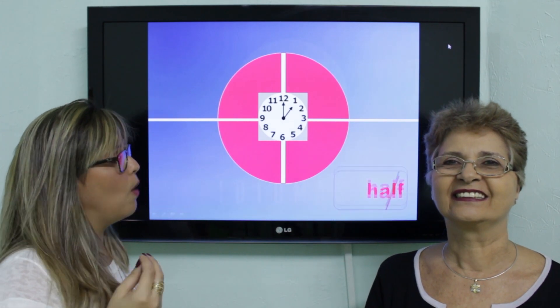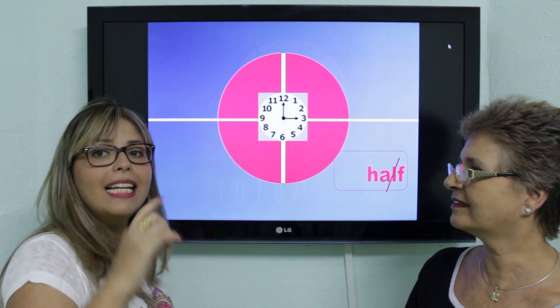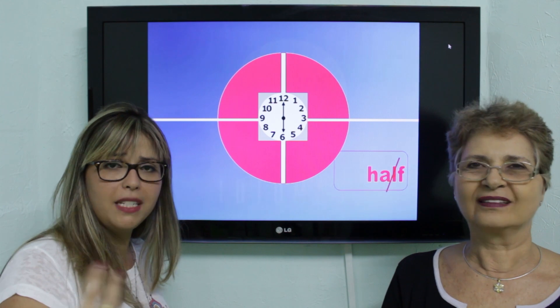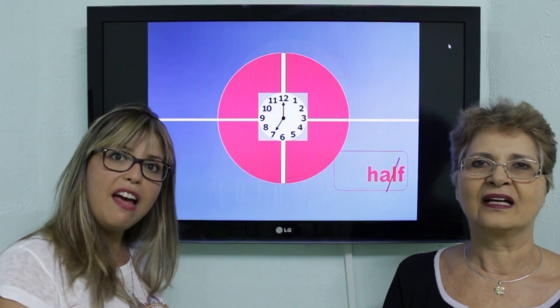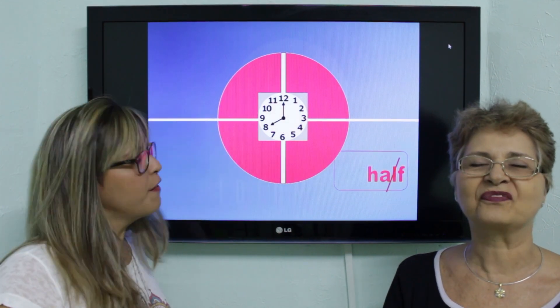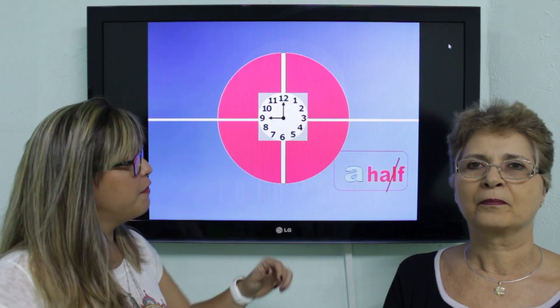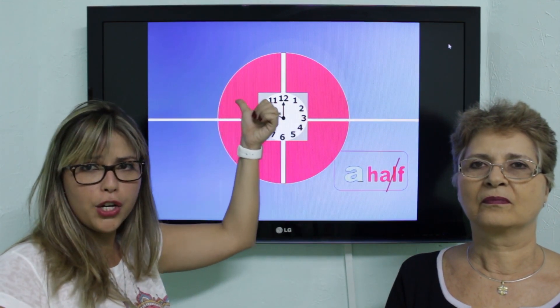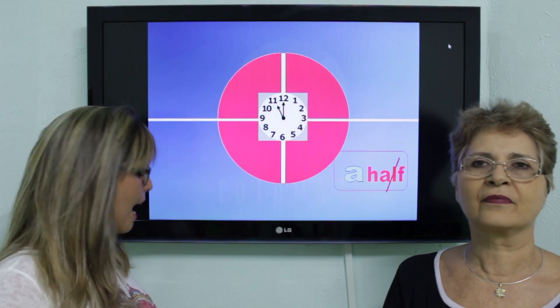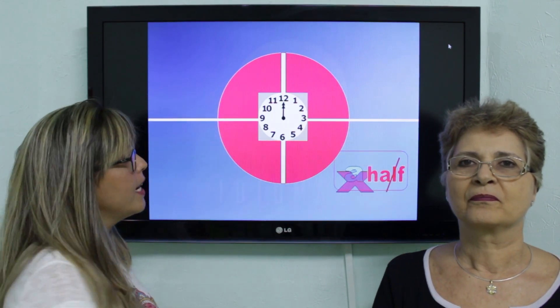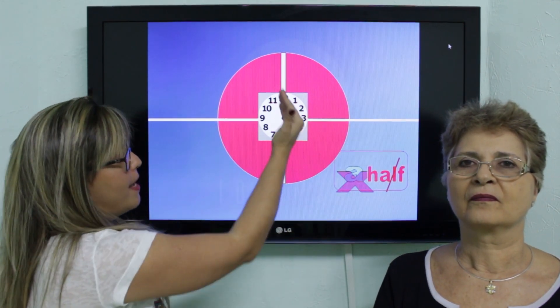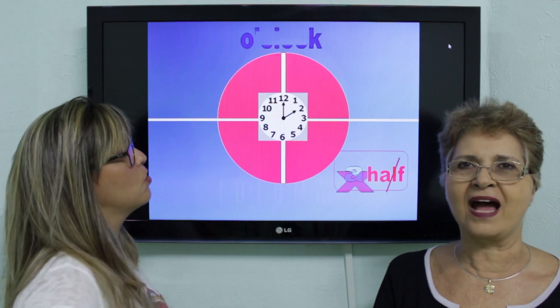E o half — olha como ele escreve, com um L, mas a gente não pronuncia esse L. Vai direto pro F: half. Everybody repeat: half. E o 'a half' — lembra que a gente teve o 'a quarter', só que na hora a gente não vai usar esse 'a' na metade. Half. So everybody: half past.